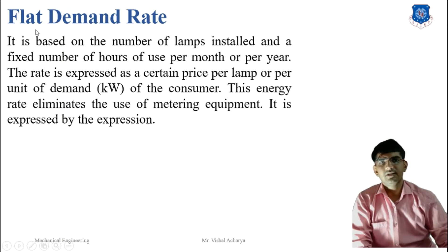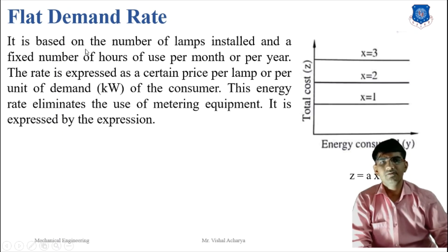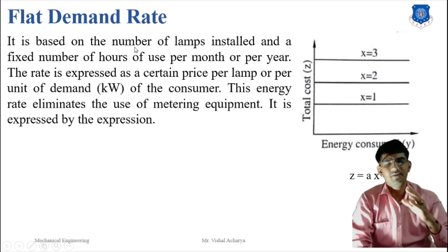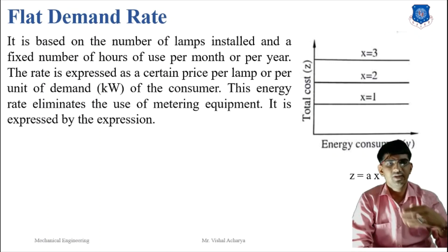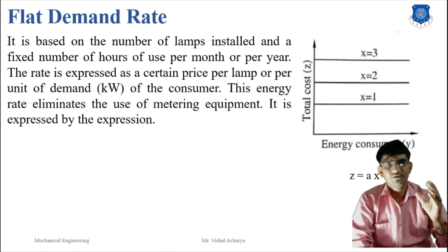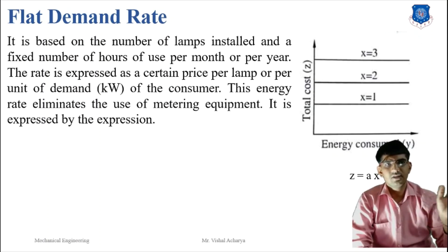First is the flat demand rate. It is based on the parameter of the lamps installed and a fixed number of hours of use. The rate is expressed as a certain price per lamp or per unit of demand of the consumer. This rate eliminates the use of metering equipment. Since the demand is fixed, we use the flat demand rate.